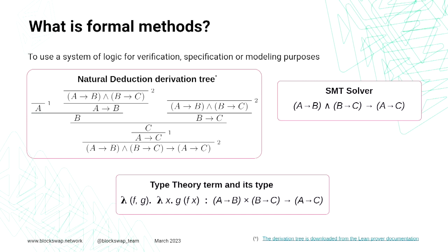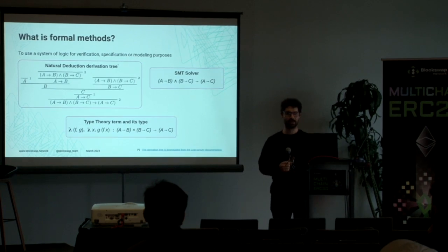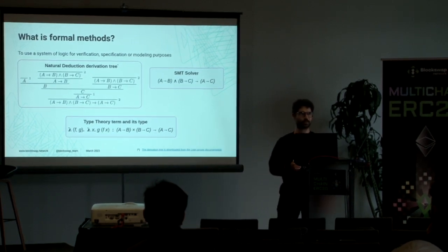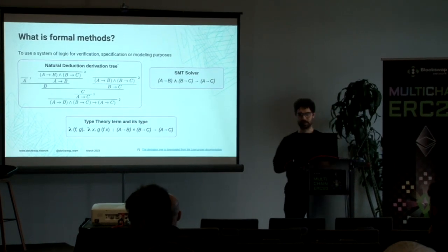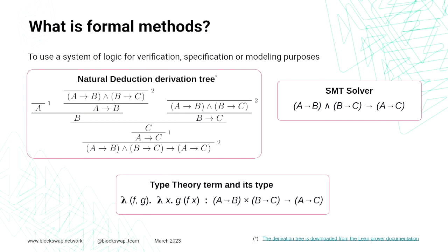An example of Formal Verification is the natural deduction derivation tree shown here. At the bottom of the tree we have the conclusion that we want to prove, and the tree itself is a proof of that conclusion. This is quite similar to matching logic, where the proof that the K-Framework builds can be something of this nature that can be checked by a proof checker.